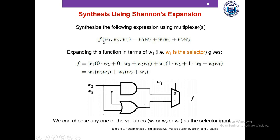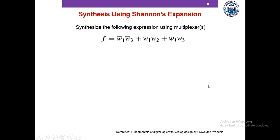Now we can choose any one of the variables W1, W2, or W3 as the selector input. Based on our choice of selector, the circuit in each case will be slightly different. I'd like you to pause this video and try to synthesize this expression using 2-to-1 multiplexers. Please pause the video and solve it.